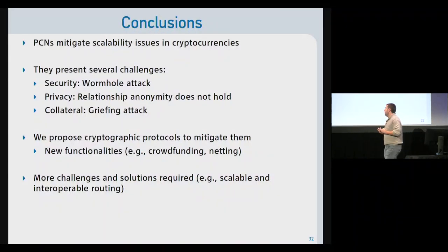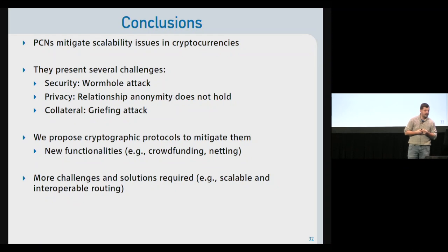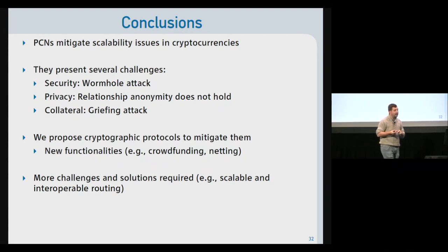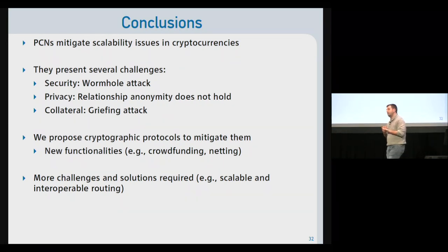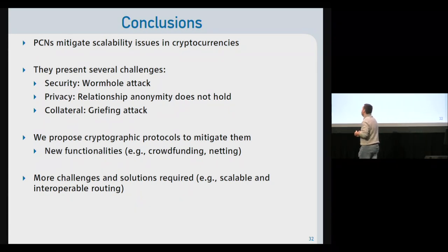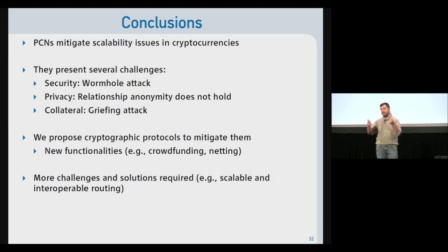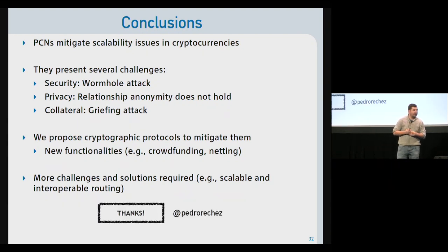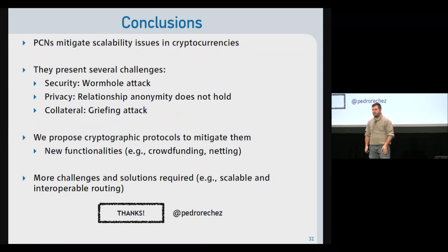To conclude: payment channel networks have been deployed in practice as a mitigation for scalability issues in cryptocurrencies. However, they still present challenges — in security with the Wormhole attack, in privacy where relationship anonymity does not hold, and in collateral which opens problems like the Griefing attack. We propose cryptographic protocols to mitigate these and open the door for new functionality like crowdfunding and netting. More challenges remain, such as developing scalable and interoperable routing mechanisms to find paths between sender and receiver. Thank you for your attention.